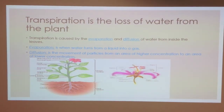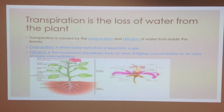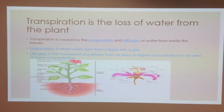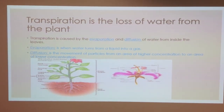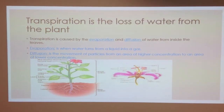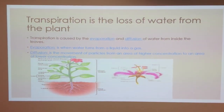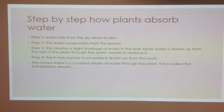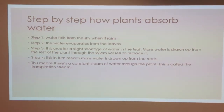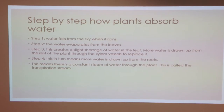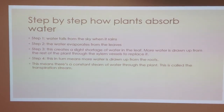Plants have tube networks. These move substances to and from individual cells quickly. The xylem is a tube network. It transports water and minerals from the root to the rest of the plant, for example to the leaves. The phloem is another tube network. It transports sugars from the leaves, where they are made, through growing and storage tissues.